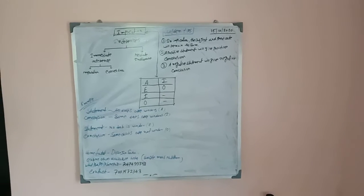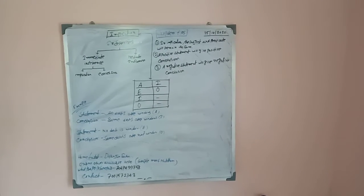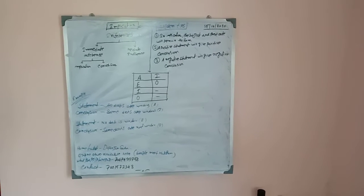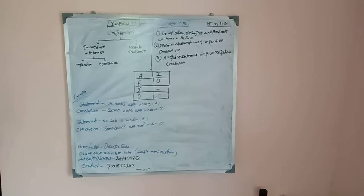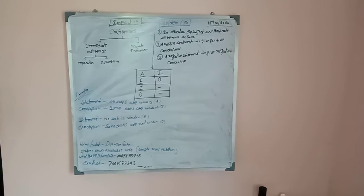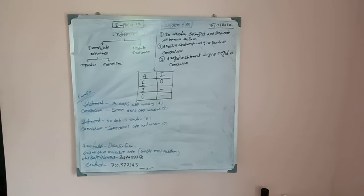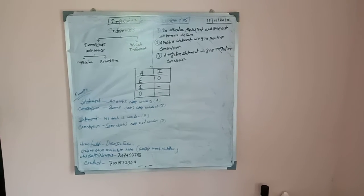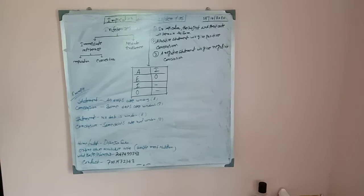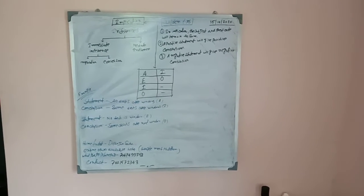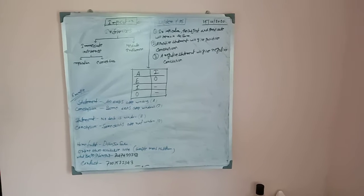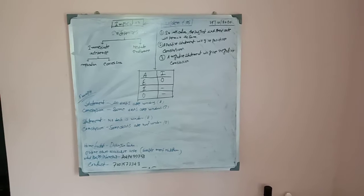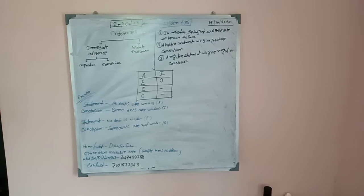Today's topic is implication. In implication, we use A, E, I, O propositions. The implication pattern goes: A gives E, I, O; I gives E, O; and similarly for E and O propositions.